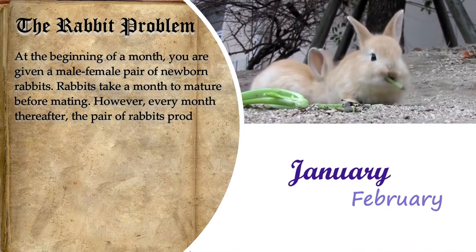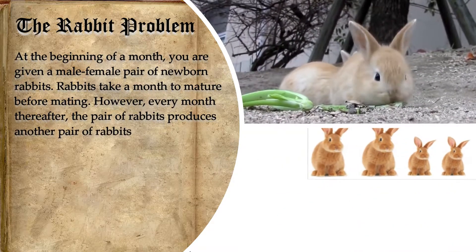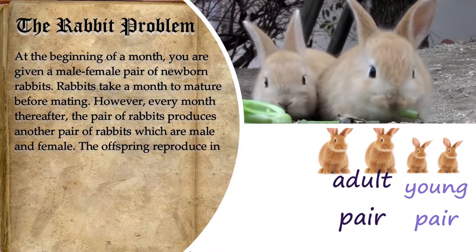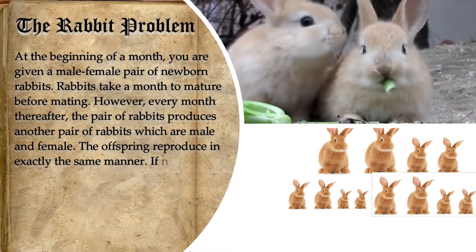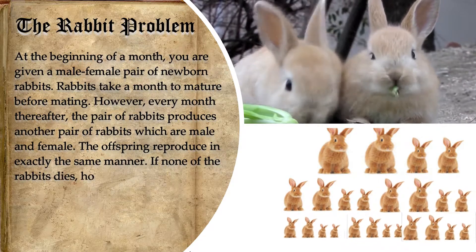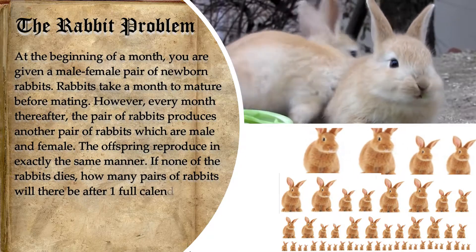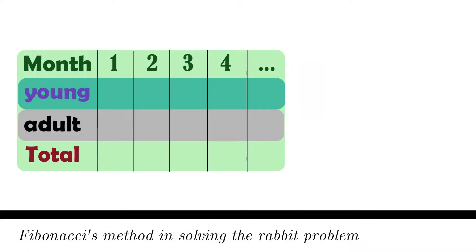However, every month thereafter, the pair of rabbits produces another pair of rabbits, which are male and female. The offspring reproduce in exactly the same manner. If none of the rabbits dies, how many pairs of rabbits will there be after one full calendar year?